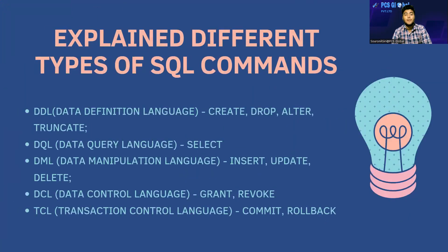Explain the different types of SQL commands. There are lots of commands in SQL: DDL, DQL, DML, DCL, and TCL. DDL stands for Data Definition Language — it is used to define, create, or modify the database structure. CREATE, DROP, ALTER, and TRUNCATE are DDL commands. DQL stands for Data Query Language and is used for querying data; SELECT is the main DQL command.